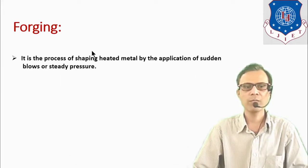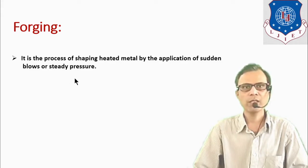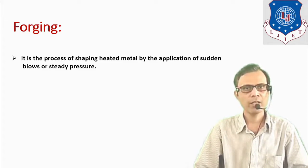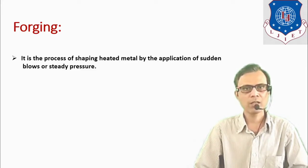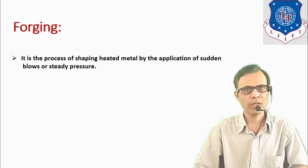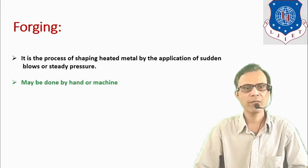Forging is the process of shaping heated metal by the application of sudden blows or steady pressure. First, metal is heated in the case of hot working process, and if it is cold forging then it may be carried out at room temperature. After that, sudden blows of the hammer are applied or steady pressure is applied to that heated metal to get the desired shape and size.